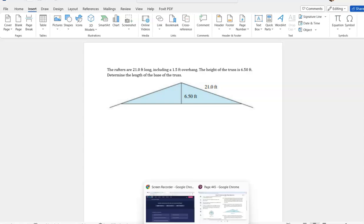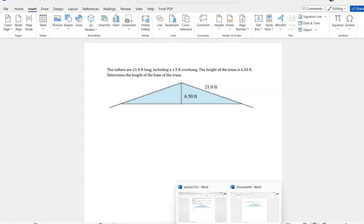We've got rafters that are 21 feet long, including a one and a half foot overhang. The height of the truss is six and a half feet. Determine the length of the base of the truss.